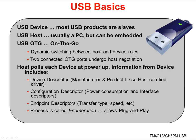Most USB products sold are slaves — for instance, a USB flash drive or camera. USB hosts are normally a PC or other computing device, but the host function can be embedded into smaller designs. USB on-the-go is a dynamic switching between the host and device roles. When two on-the-go ports are connected together, they undergo a negotiation to determine which one will act as the host and which one will act as the device.